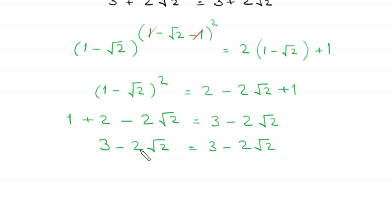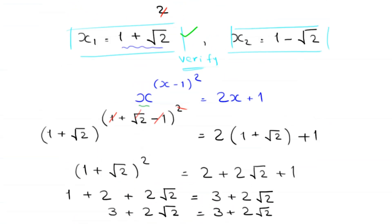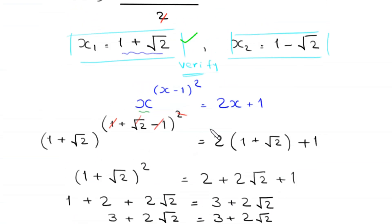Left-hand side equals right-hand side, so the solution x₂ equals 1 minus square root of 2 is also a valid solution.